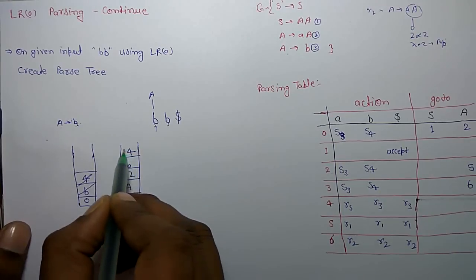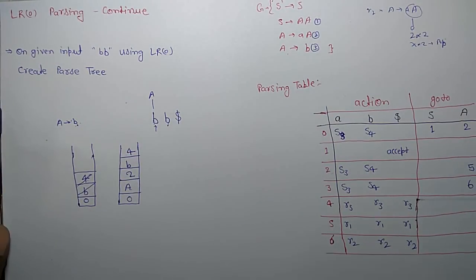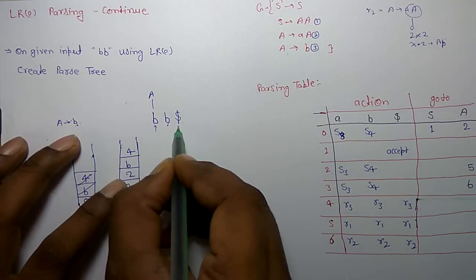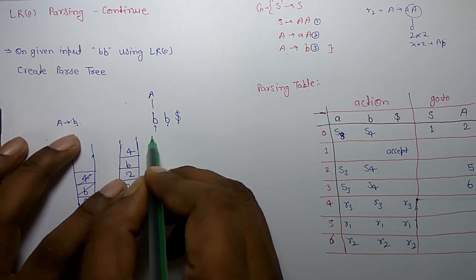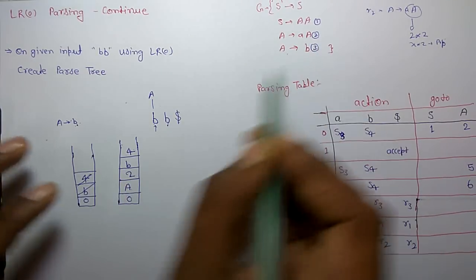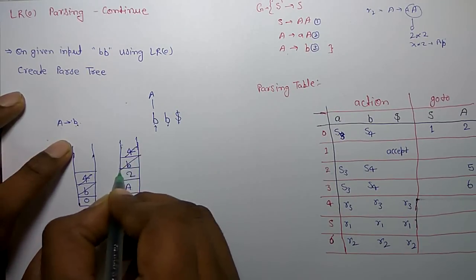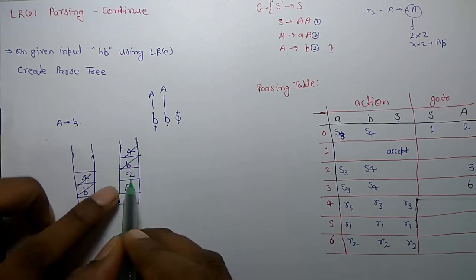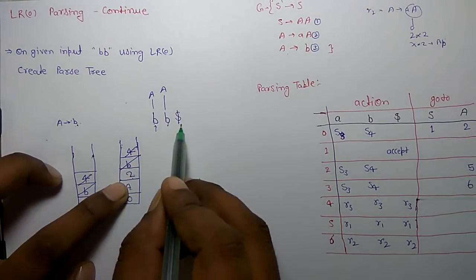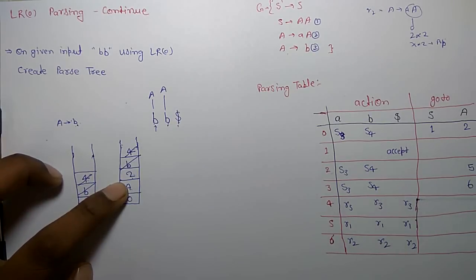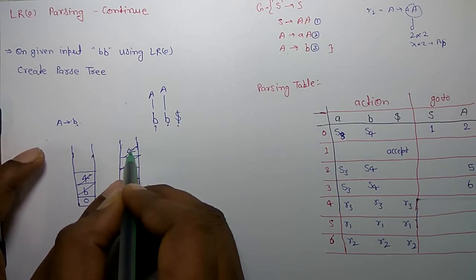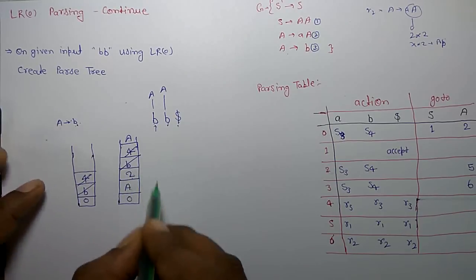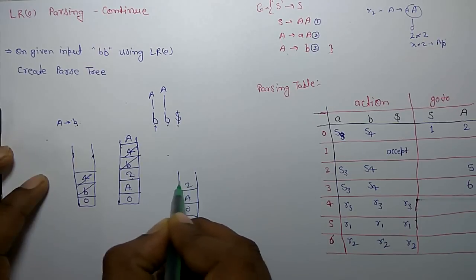Now what do you have to do? Currently you are on state 4, and you have read dollar. So when you read the dollar symbol, you find that you need to perform reduction. This means dollar is not being pushed; reduction is to be performed. The reduction is on R3, so R3 says A derives B. There are 2 symbols on its right side, meaning 2 into 2 = 4 pops to perform. So pop 1, 2, 3, 4. When you have popped these 4, you add S on top, because S derives AA — both AAs are popped and replaced with A. Now your stack becomes 0 and A 2 A.